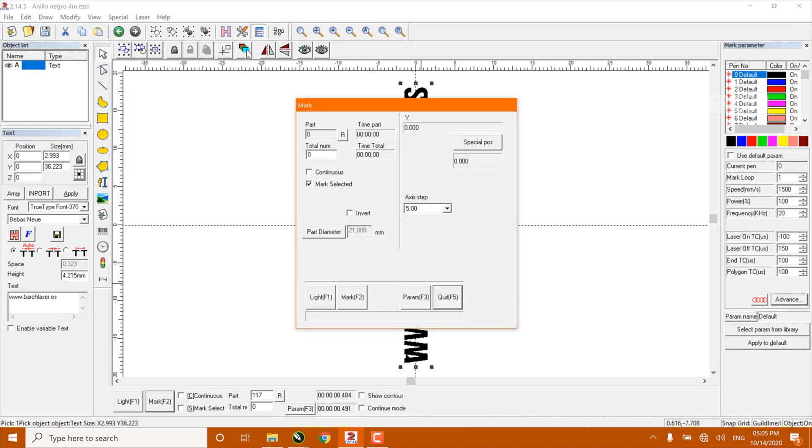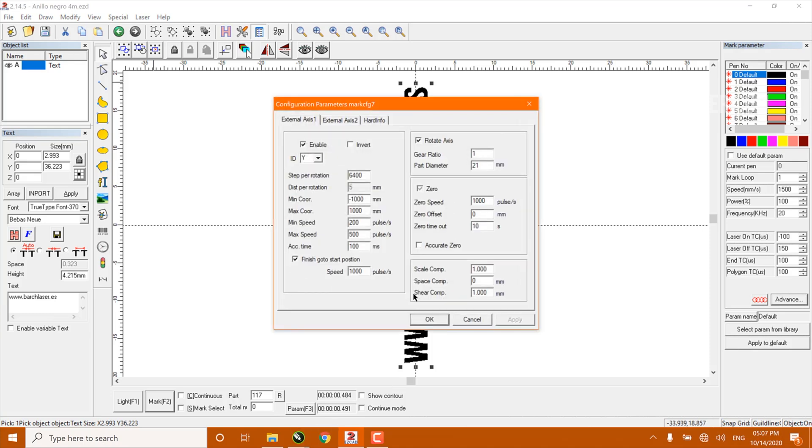We will return to our software and change the ring diameter. In this occasion, it will be the internal diameter of our ring, which is 19 millimeters.